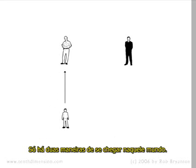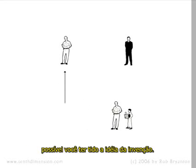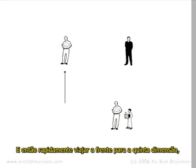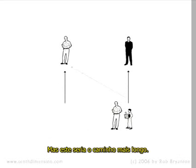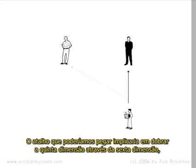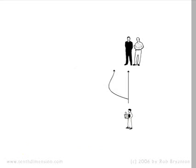There are only two ways you could get to that world. One would be to travel back in time, somehow trigger the events that cause you to come up with your invention, then travel forward in the fifth dimension to see one of the possible new worlds that might have resulted. But that would be taking the long way. The shortcut we could take would involve us folding the fifth dimension through the sixth dimension, which allows us to instantly jump from our current position to a different fifth dimensional line.